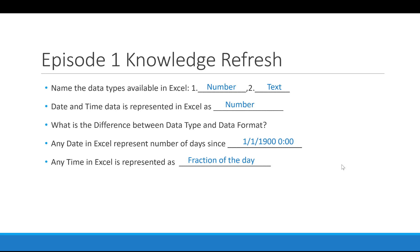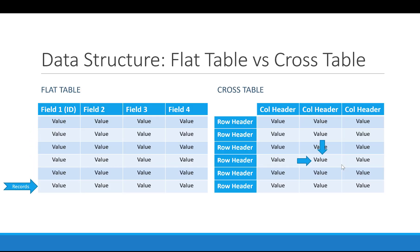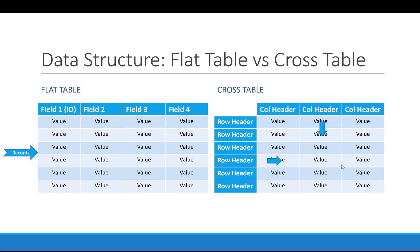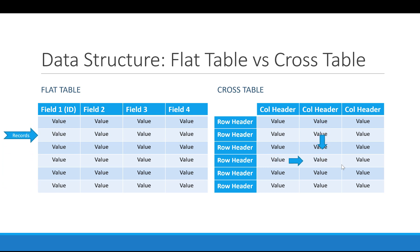Now let's move on to what we're going to cover in this episode. We're going to talk about a very important concept that is at the heart of data structure: table types. You're either going to be working on a flat table or a cross table. A flat table is basically comprised of fields and records.